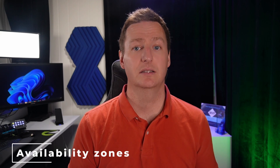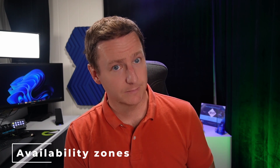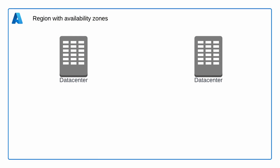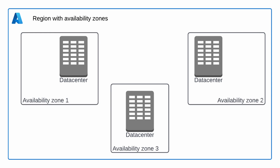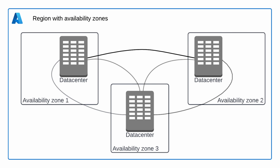Moving on from regions and data centers, we have something closely related: availability zones — not to be confused with availability sets. Availability zones are something a lot of Azure regions have, but not all. While regions only require at least two data centers, for a region to be availability zone enabled it needs at least three data centers to provide those three availability zones. Each availability zone consists of at least one data center, and each zone must be connected to the others through a low latency link with a round trip latency of less than two milliseconds, over diverse fiber paths.